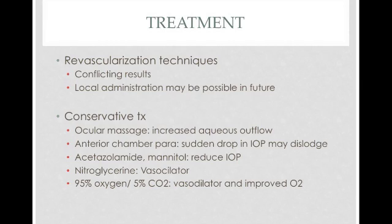Here is the rationale for some of the conservative treatments, even though there's no evidence one is better than another. Ocular massage increases aqueous outflow by opening the canal of Schlemm when you press down. Anterior chamber paracentesis removes fluid from the anterior chamber, decreasing intraocular pressure, which could help the clot progress more distally and preserve more of the retina. Dehydrating agents like acetazolamide or mannitol can also reduce intraocular pressure. Nitroglycerin is a vasodilator — enlarging the vessel so the clot could move more distally. You could also use 95% oxygen and CO2, where the CO2 causes vasodilation and the oxygen enhances oxygenation.